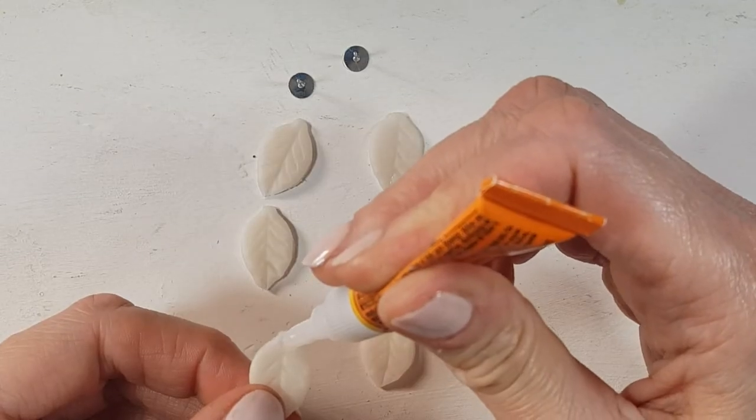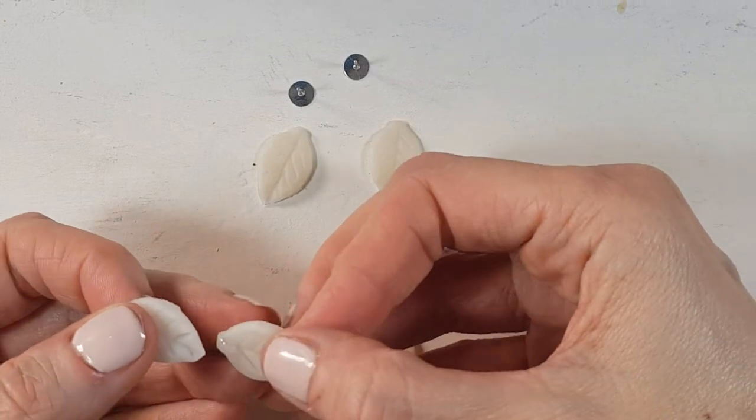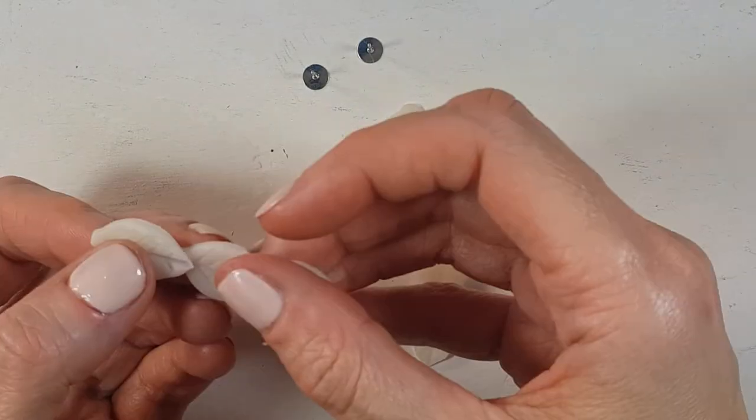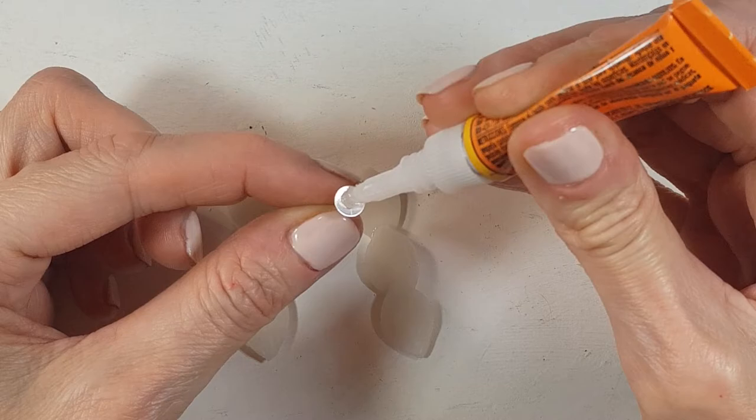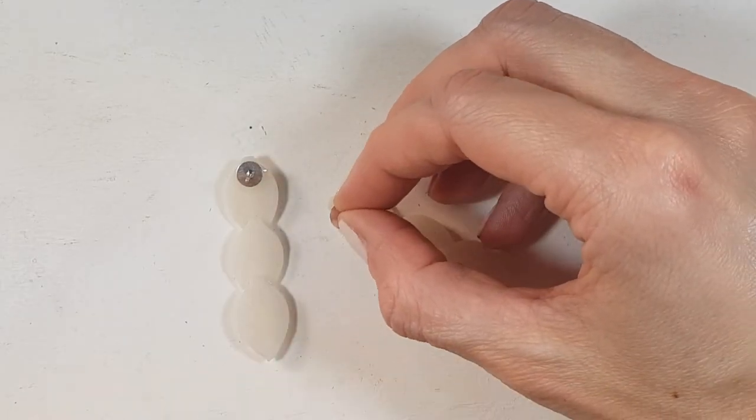For the triple leaves, I'm just going to be taking my super glue, gluing every leaf on top of the edge of the other one, like this, and then I'm just going to be gluing the earring part as well to the back of it.